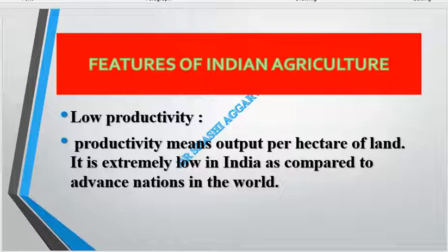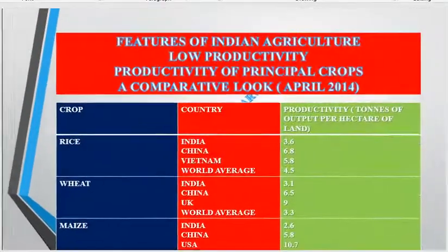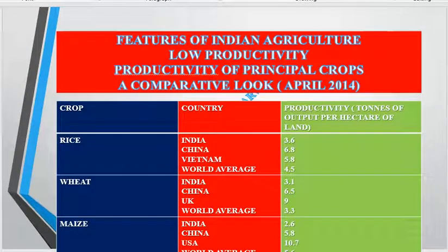As compared to other countries, India has low productivity. Because our farmers' income is low, they cannot afford to use modern techniques. For example, in rice production, China's yield is 6.8 tonnes per hectare, Vietnam's is 5.8, the world average is 4.5, and India's is only 3.6 — which is even less than the world average.